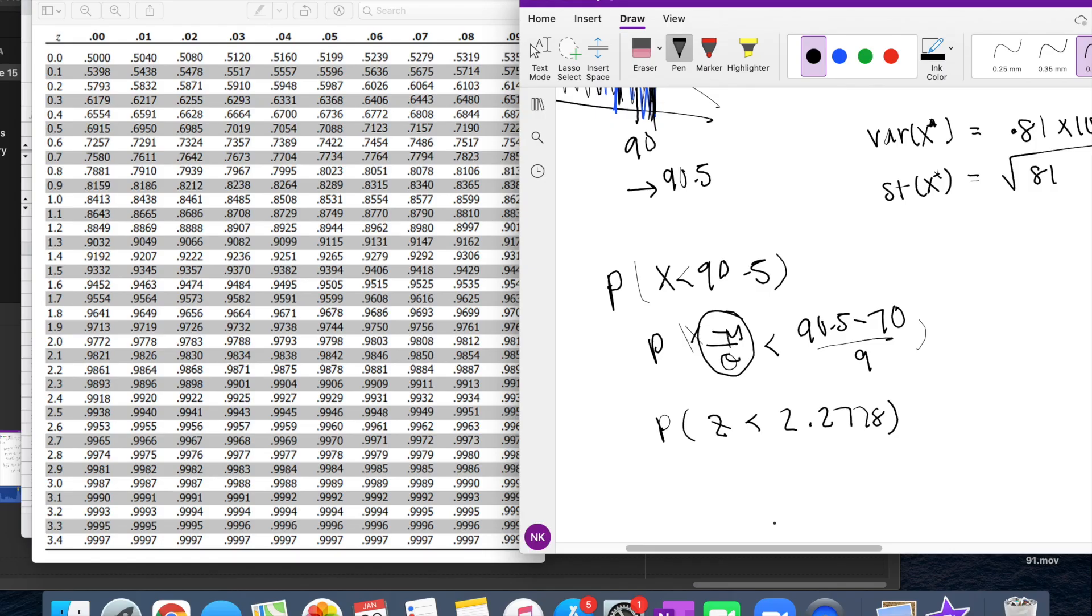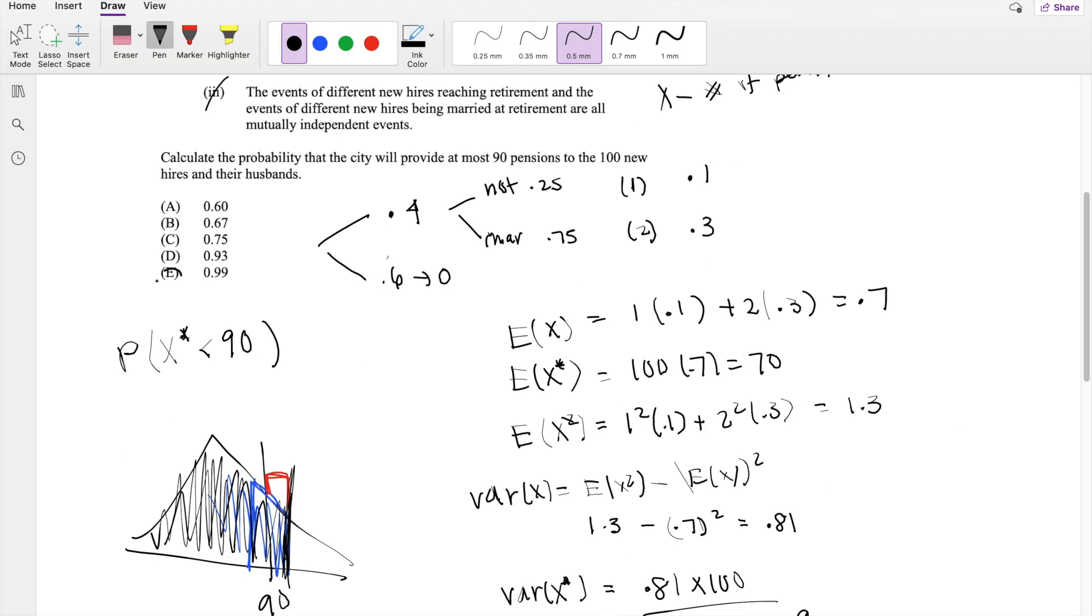Let's pull up our z table. Z is less than 2.28 equals approximately 0.9887, which is approximately 0.99, our answer E.